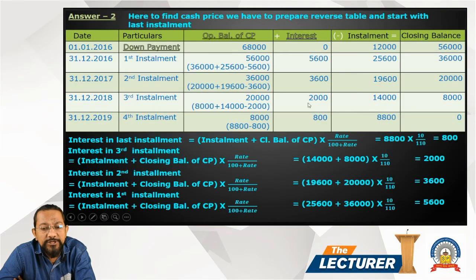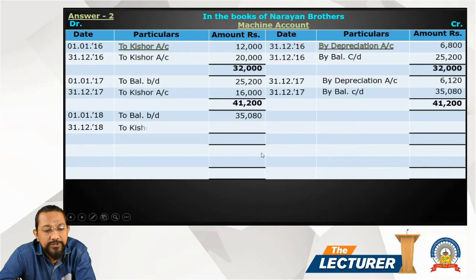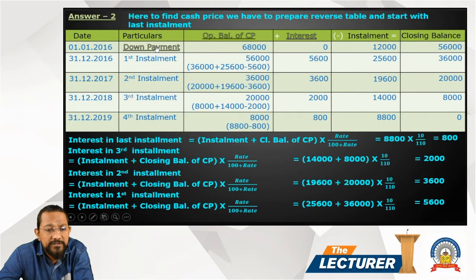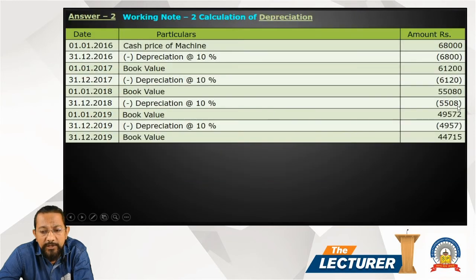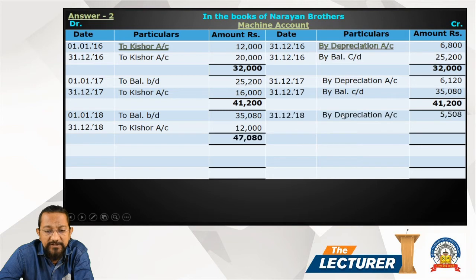Third year: installment is 14,000, interest is 2,000, repayment of cash price is 12,000. Entry: Machinery Account debit 12,000, Interest Account debit 2,000, to Kisor Account 14,000. Payment: Kisor Account debit to Bank 14,000. Depreciation for year 3 is 5,508. Entry: Depreciation Account debit to Machinery Account 5,508. Account closed with balance carried down. The machine account balance at 31st December 2018 is 49,572.